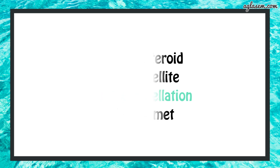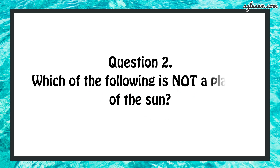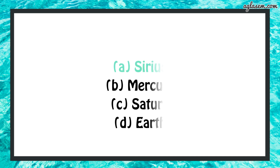Question number 2 says: which of the following is not a planet of the sun? A - Sirius, B - Mercury, C - Saturn, D - Earth. The answer is A, that is Sirius.